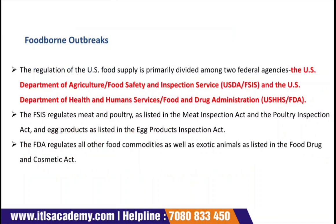The regulation of the US food supply is primarily divided among two federal agencies: the US Department of Agriculture's Food Safety and Inspection Service (USDA FSIS), and the US Department of Health and Human Services' Food and Drug Administration (HHS FDA). FSIS regulates meat and poultry as listed in the Meat Inspection Act and Poultry Products Inspection Act, and egg production as listed in the Egg Production Act. The FDA regulates all other food commodities and exotic animals under the Food, Drug, and Cosmetic Act.